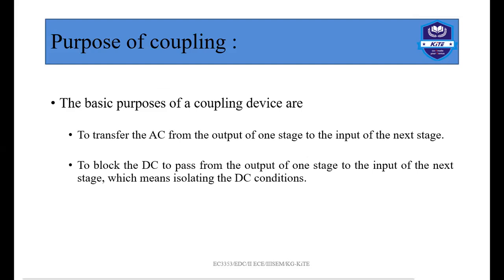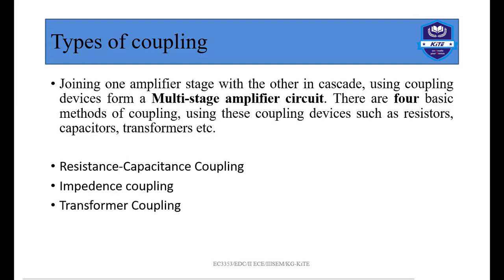The purpose of coupling is to transfer the AC signal from the output of one stage to the input of the next stage, while blocking the DC so that it does not pass from the output of one stage to the input of the next — meaning the DC biasing conditions of each stage remain isolated from each other. The types of coupling used are: RC coupling, impedance coupling, and transformer coupling.